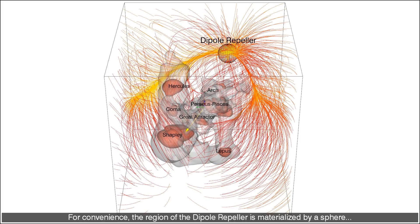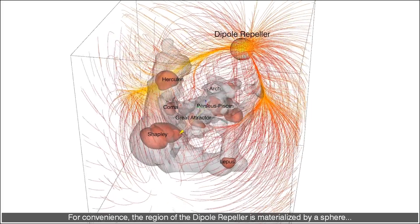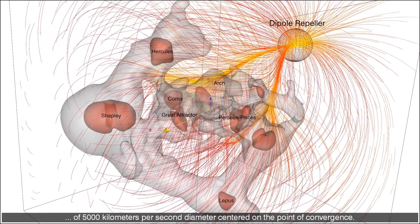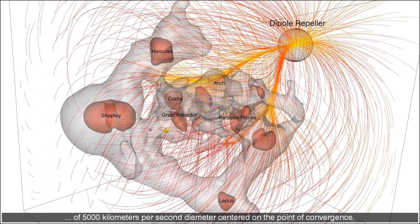For convenience, the region of the dipole repeller is materialized by a sphere of 5000 km per second diameter centered on the point of convergence.